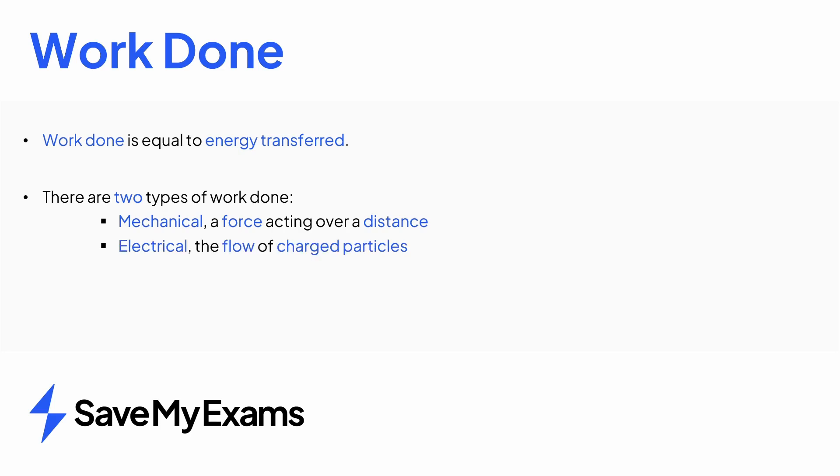In summary, work done is equal to the energy transferred. There are two types of work done - mechanical, involving the energy transferred when a force acts over a distance, and electrical, involving the energy transferred by the flow of charged particles. Remember that exam questions commonly link the topics of force and energy, and work done is your access point between the two in calculations.